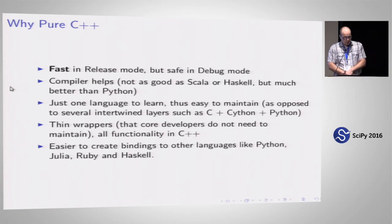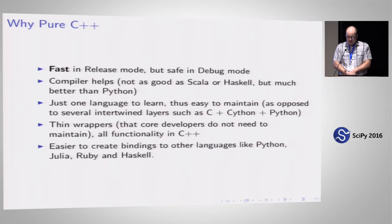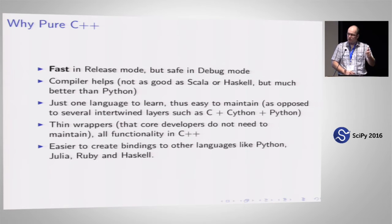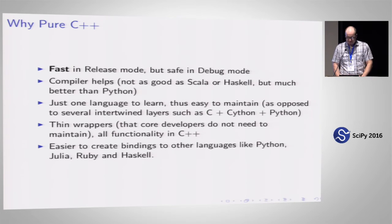So why did we choose to implement this in C++? First of all, it's very, very fast in release mode, but it can be made safe in debug mode — I'll talk about that on the next slide. The compiler also helps because it can catch a lot of problems at compile time. And it's just one language to learn — we don't have these layers of C++, C, Python in separate repositories. If something goes wrong, people just come to the single C++ repository. All the tests are in C++, and the Python wrappers are very, very thin. It also allows us to have bindings to other languages.